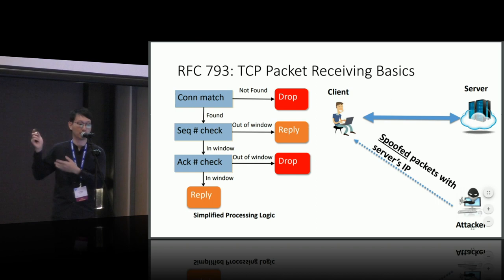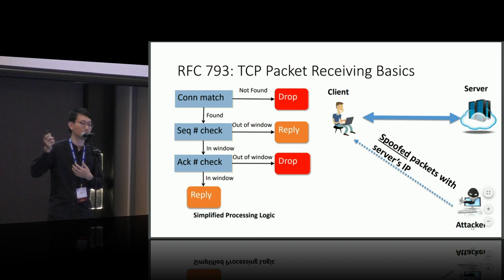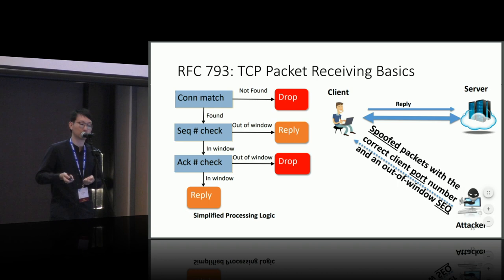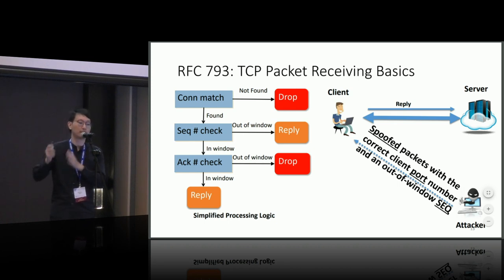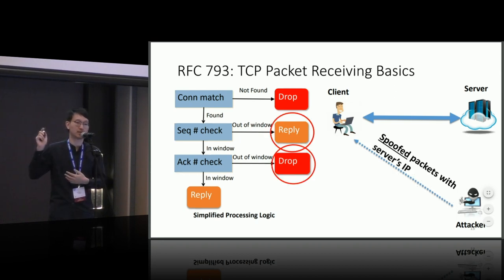What's the secret? To successfully inject spoofed data, we need to know how the TCP stack validates an incoming packet. The secret is actually a three-tuple including port number, sequence number, and acknowledgement number. Looking at the sequence number check: when the packet contains an out-of-window sequence number, the client sends a response back to the server; when the sequence number is in-window but the acknowledgement number is out-of-window, the packet is silently dropped. So the client behaves differently depending on whether the sequence number is in-window or not.